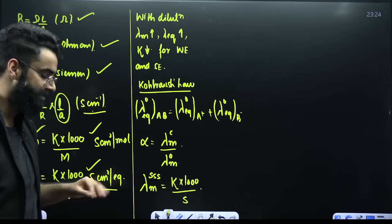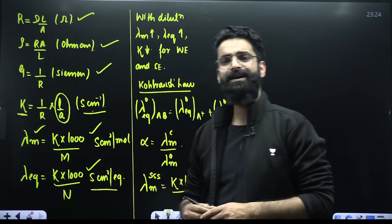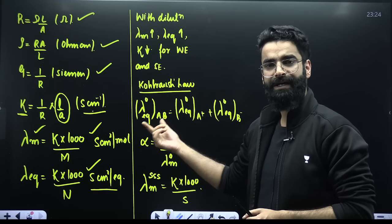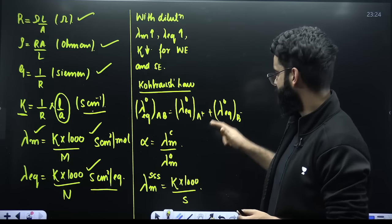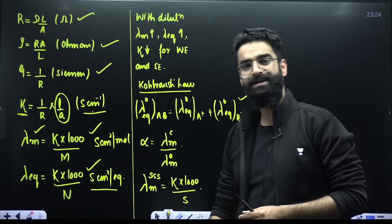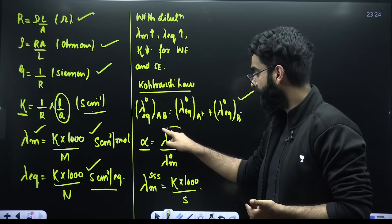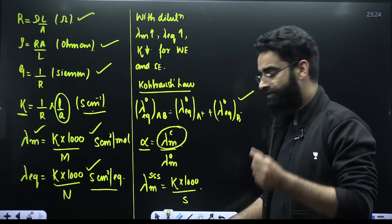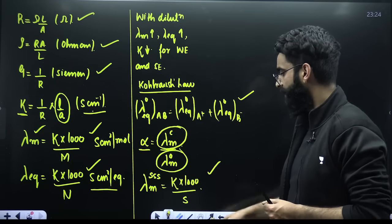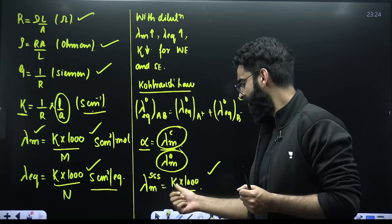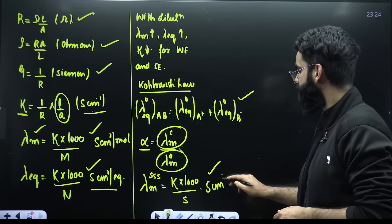Kohlrausch's law states that the equivalent conductivity at infinite dilution of an electrolyte equals the sum of their individual ionic conductivities. Its main application is calculating the degree of dissociation of a weak electrolyte: α = molar conductance at a given concentration divided by molar conductance at infinite dilution. Molar conductivity of a sparingly soluble salt equals κ × 1000 divided by its solubility (or molarity), in S·cm²/mol.